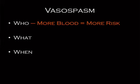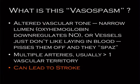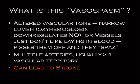What is vasospasm? Basically, the vessels in the head hate lying in blood — it's an irritant, so they spasm. It doesn't happen right away; it has to wear them down. Oxyhemoglobin is the bigger irritant and downregulates nitric oxide, which is a vasodilator. Vasospasm is defined as multiple arterial territories affected, and if missed, it can lead to stroke.